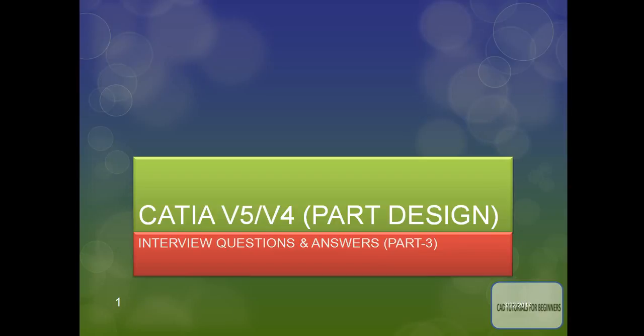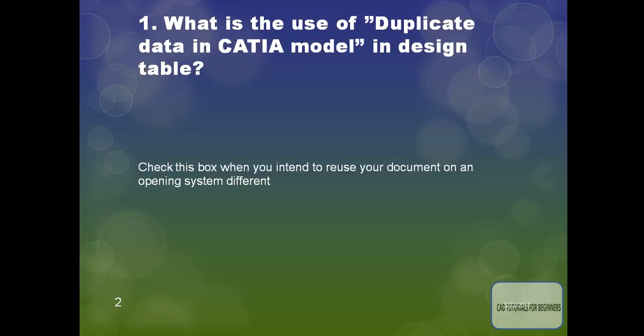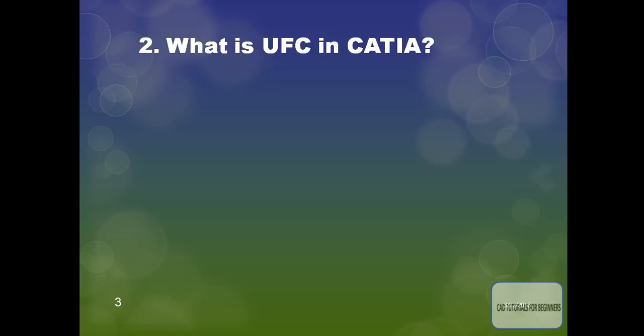Welcome back to this tutorial. Today we will see more CATIA V5 interview questions. The first question: what is the use of duplicate data in CATIA model in design table? There is an option in design table called duplicate data. Check this box when you intend to reuse your document on an operating system different from the one used to create the design table.